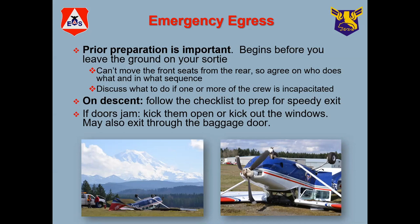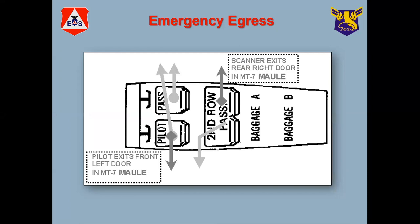Once on the ground and the aircraft has stopped moving, exit the aircraft. The pilot and co-pilot pull their seats forward and exit through the right side doors. The people in the back seat come out the left side door. In the event of a water landing, somebody is always responsible for grabbing the life raft and taking it with them. If you're wearing flotation devices, do not inflate them while you're still in the aircraft, particularly if you're in the water.